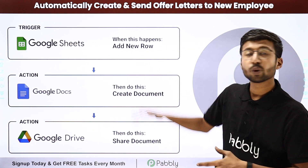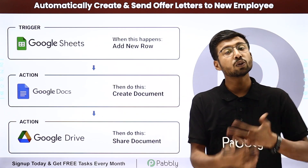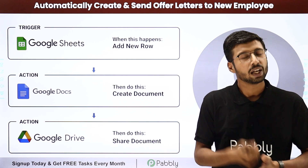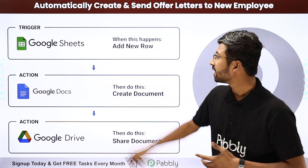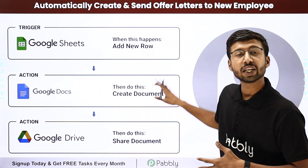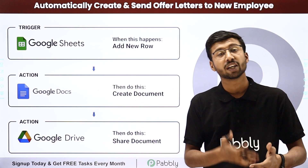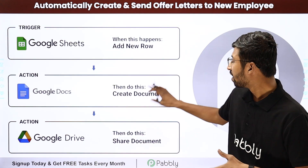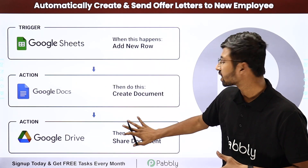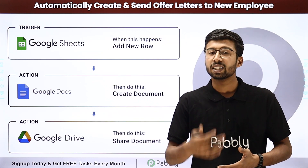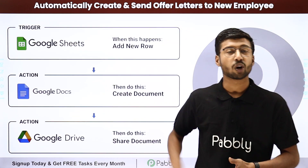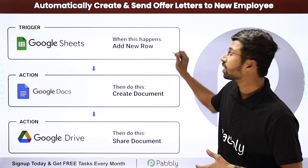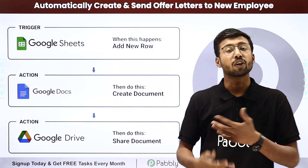Using this automation, what you have to do is enter the details of the new candidate as a new row in a Google Sheet. Then automatically, from a Google Docs template, we are going to create a new document — a new offer letter for that employee. And then automatically, we are going to share the same offer letter with that employee from our Google Drive. You just have to enter the employee's details and automatically the offer letters are sent.